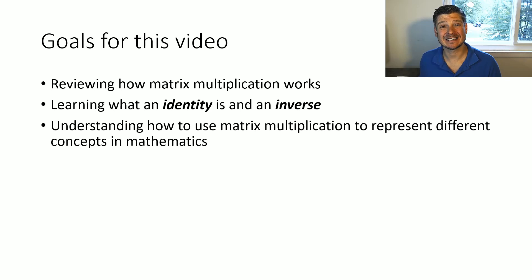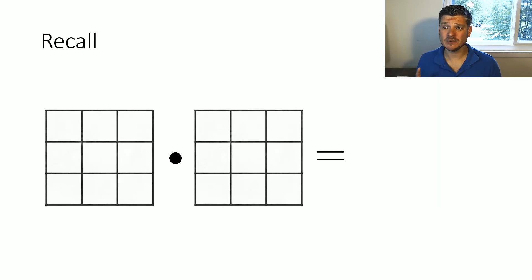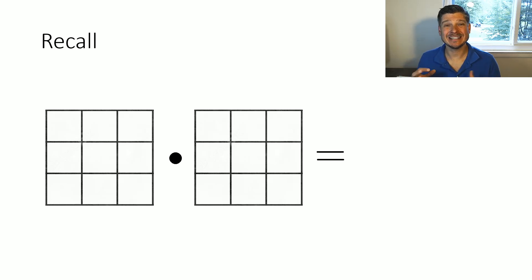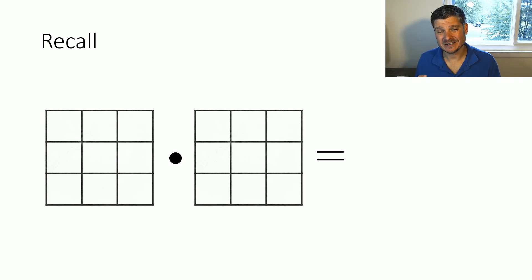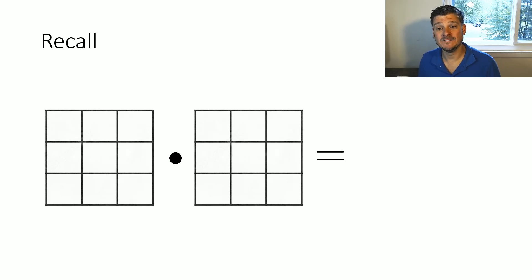So first of all, let's review matrix multiplication. I want you to think of matrices as grids. We talked about indexing, and how there are rows and columns, and each spot in this matrix has its own element, its own entry. I think it helps to think of it as a grid where we're looking at all these different elements. I'm going to skip the typical matrix notation for now just so we can review the concept of matrix multiplication visually.